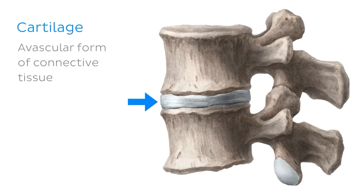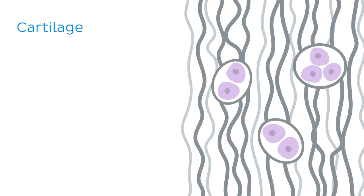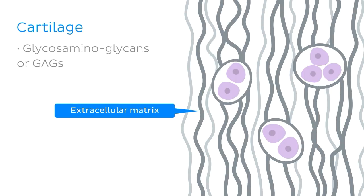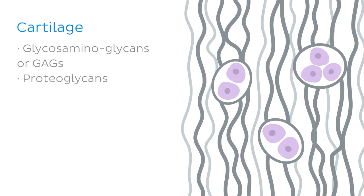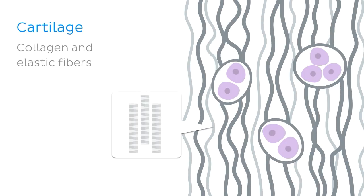Cartilage is an avascular form of connective tissue that is tough as well as flexible. Taking a closer look at a diagrammatic view, cartilage is characterized by its extracellular matrix, which usually contains high amounts of glycosaminoglycans, also abbreviated as GAGs, as well as proteoglycans. This extracellular matrix interacts with collagen and elastic fibers, and the variations in the composition of the cells and matrix are what define what type of cartilage it is.